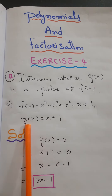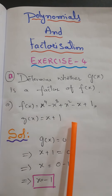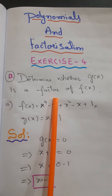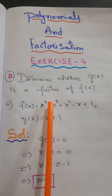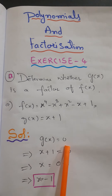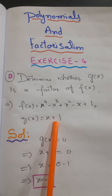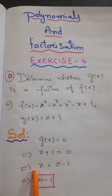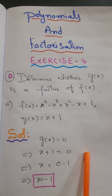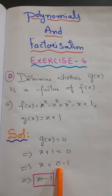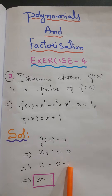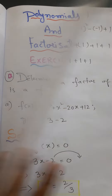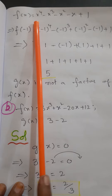To prove that g(x) is a factor of f(x), we set g(x) equal to 0. So x + 1 = 0, which gives x = -1.